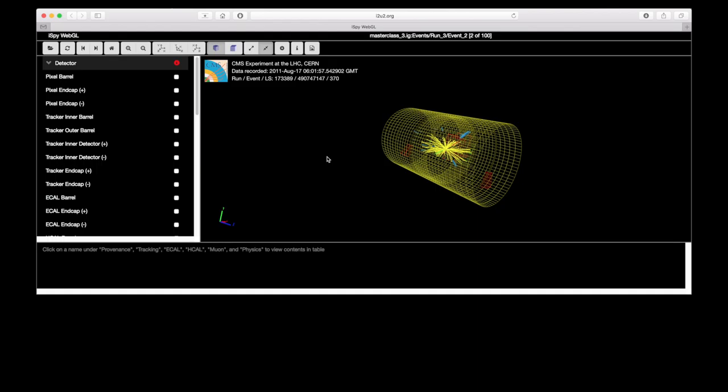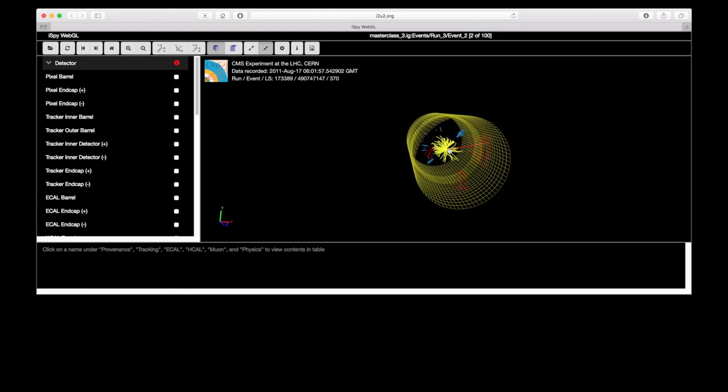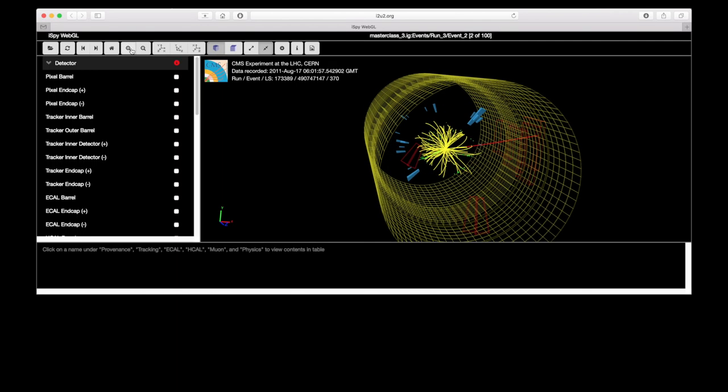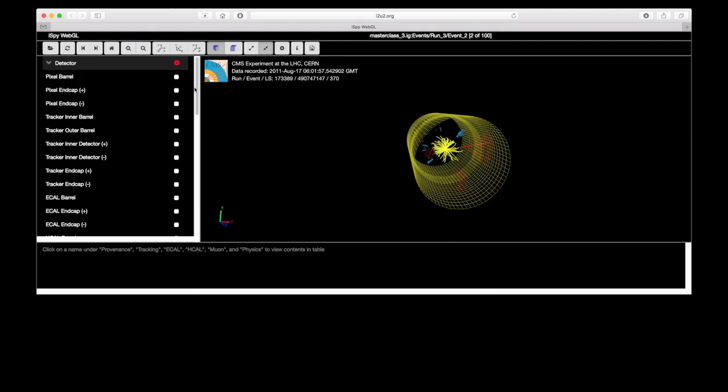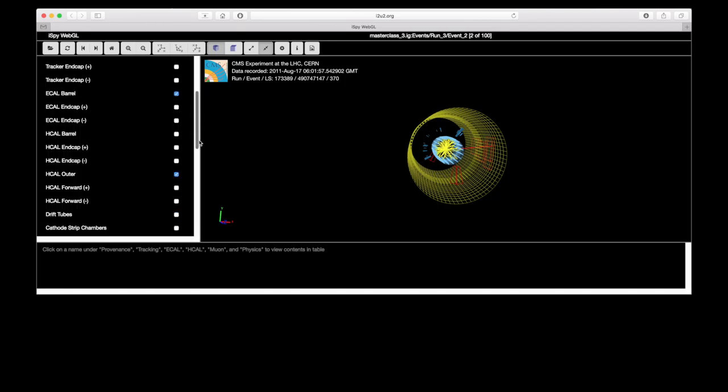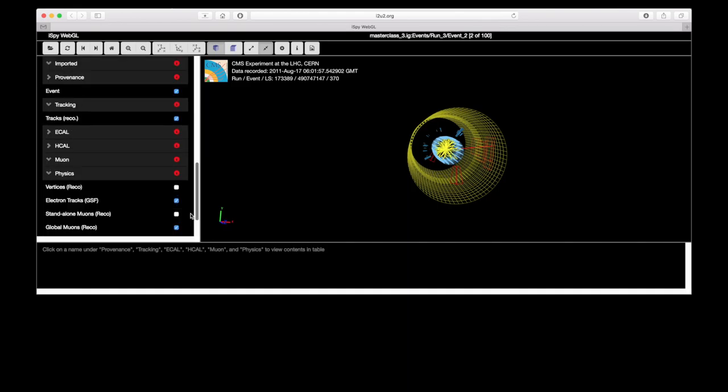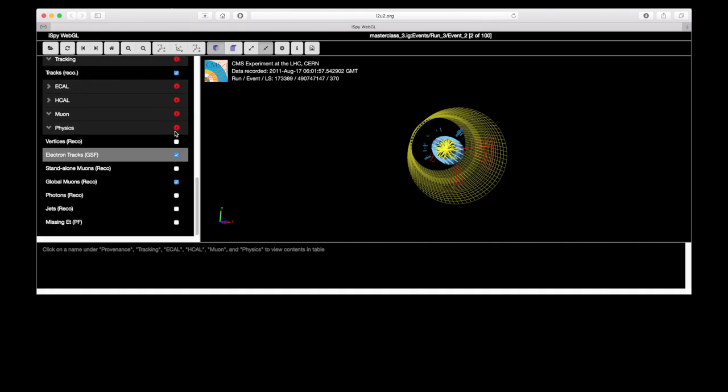Now we are in iSpyWebGL CMS experiment eLab. Here we can see a CMS detector. And inside it, we can see yellow lines, which represent collision decay. Now to set some things in order for easier analysis. So first, make this ECAL barrel visible. So ECAL barrel is actually electromagnetic calorimeter layer, where electrons and photons and some other particles stop, turn off tracks of collision, and turn on missing ET.